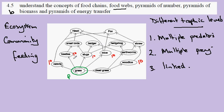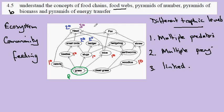Our secondary consumers include small birds and the badger. We can see that the grass is eaten by the rabbit, and then the rabbit is eaten by the hawk — this would mean that the hawk is also a secondary consumer. However, if the hawk feeds on the small birds, then we have grass, primary consumer, secondary consumer, and the hawk in this case is acting at the tertiary consumer level.